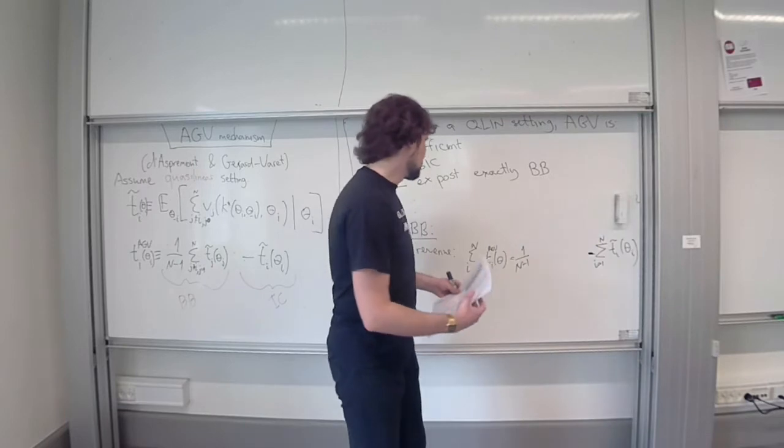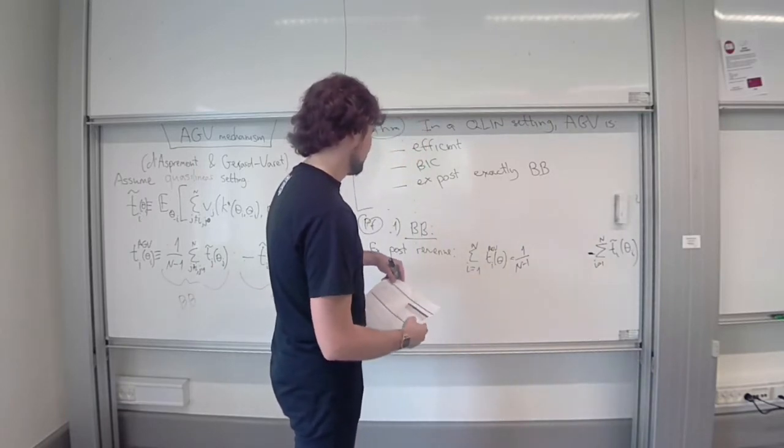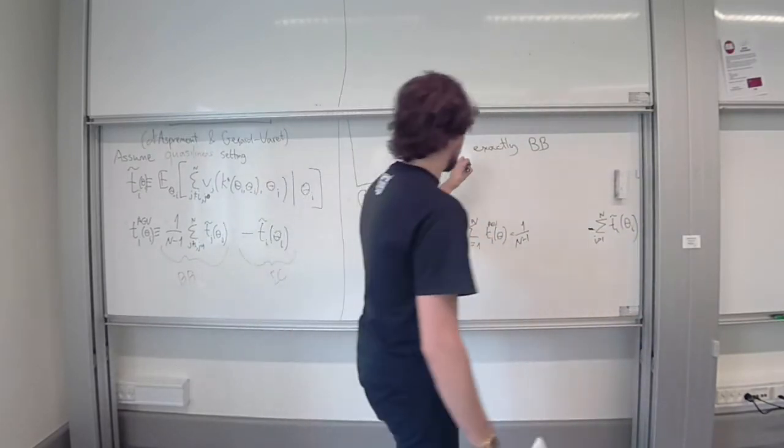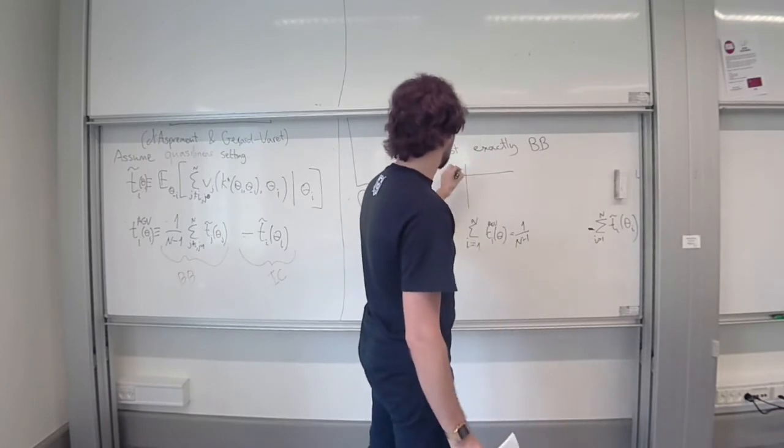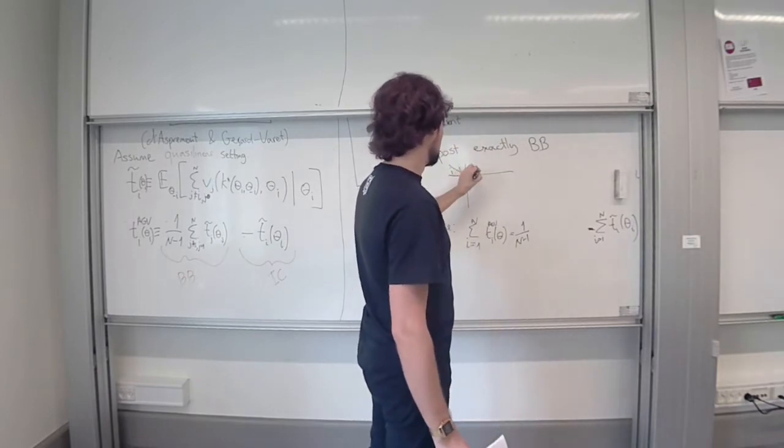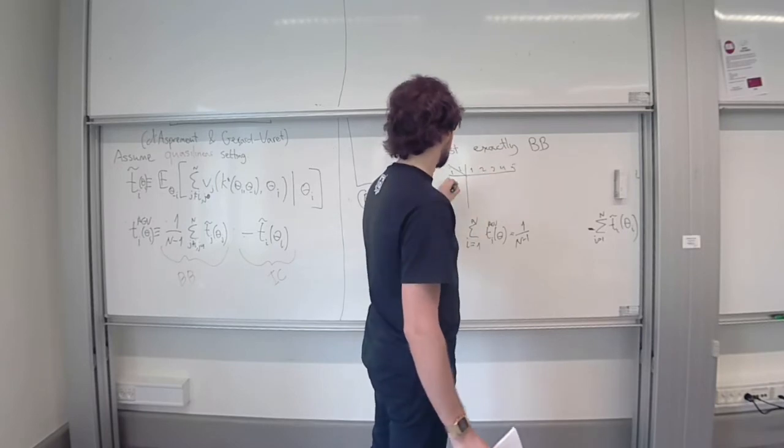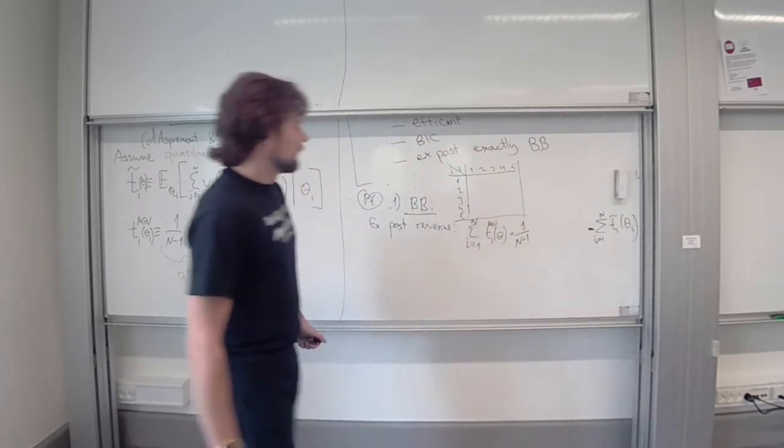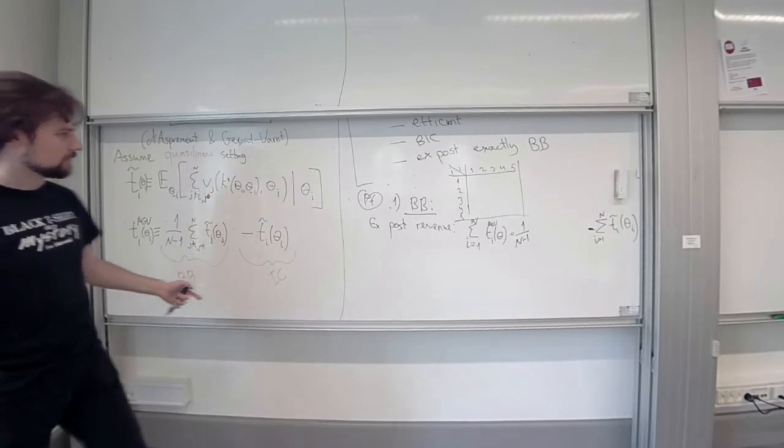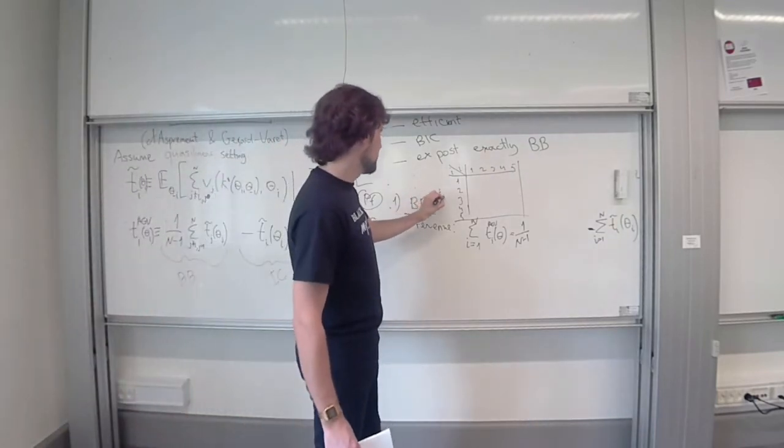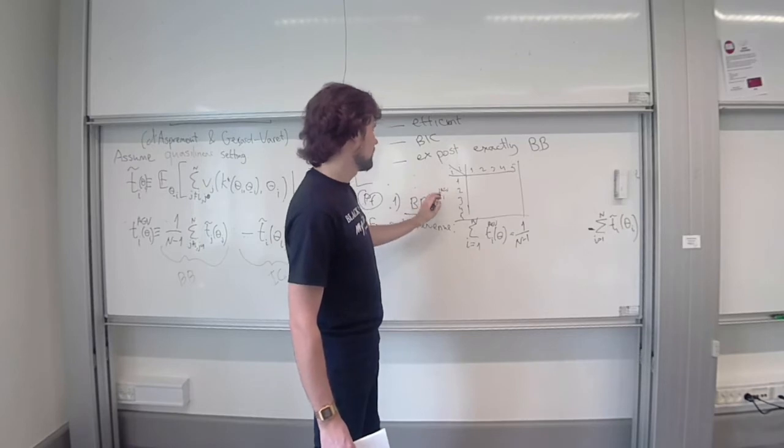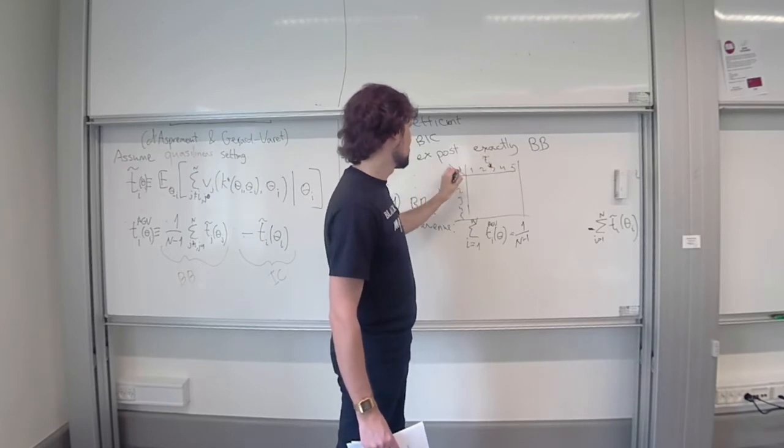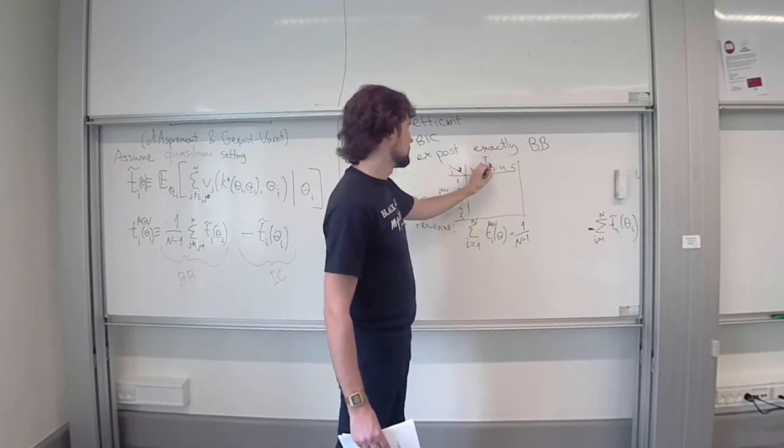Let's maybe try to draw a table. So player 1, 2, 3, 4, 5, and so on. And let's assign the weight that T_i AGV assigns to T_j tilde. Okay, so this will be j's. So T tilde of any given, for example, transfer of player one assigns weight minus one to T tilde one. And so, what does player once transfer AGV, what is the weight that it will be in this sum? So it's one over n minus one.